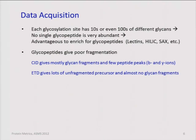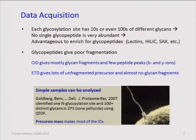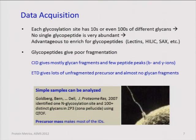With ETD you also won't see the glycan fragments, so you won't know for sure that it's a glycopeptide. Nevertheless, simple samples can be analyzed. I was part of a group that looked at the zona pellucida protein — that's the egg. There were four potential N-glycosylation sites; only one turned out to be populated, but it was very populated with many different glycans. We used QTOF data and got a few lucky spectra with peptide fragmentation to identify which peptide carried glycosylation, but most of those 100-plus glycoforms were identified by precursor mass. Of course, this doesn't scale to extremely complex samples — and that's the subject of today's talk.